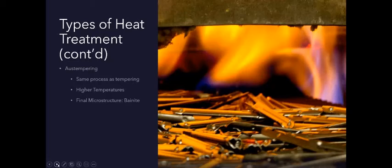The austempering process requires a significantly higher temperature than tempering, however, the duration of the process is nearly the same. Due to these high temperatures, austempering creates a microstructure known as bainite.